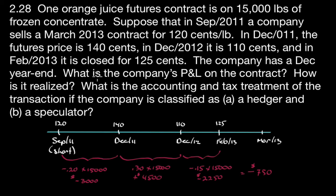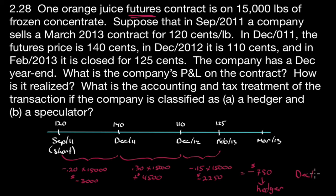So we have a $750 loss — that's the answer to the first question. How is it realized? These are futures contracts, so they are realized daily through daily mark-to-market settlements, not all at once. For the accounting and tax treatment: if the company is classified as a hedger, all you worry about is the total $750, and for tax purposes that loss would land on the December 2013 statement.